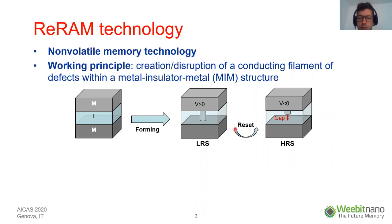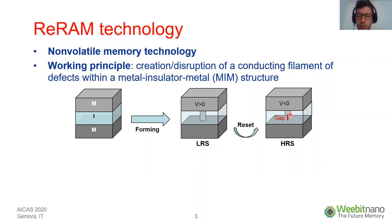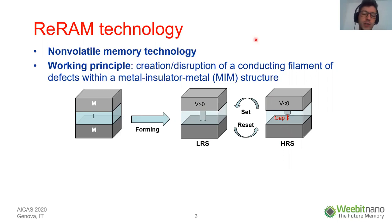Ideally, if we control this process in current, when we apply a negative voltage polarity, we can induce some kind of an opposite event, which is called the reset, which basically consists in the depletion of the conductive filament locally, creating an insulating gap. This brings the device into a high-resistive state. Of course, we can cycle between these two states, and depending on the technology, this can typically be done several millions of times or even more.